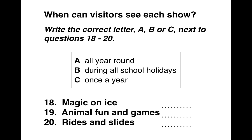We put on three main shows for children, but parents should make sure that they book well in advance to avoid disappointment. Our children's shows are very popular. Tickets for Magic on Ice sell out very quickly, because this is our Christmas show and it only runs for two weeks during the Christmas holiday. If you're looking for something to do with your children at the weekend, I would recommend a visit to our farm to see Animal Fun and Games. This show is open on Saturdays and Sundays, during both term time and school holidays. Finally, Rides and Slides is closed during the school term but open when children are off school.